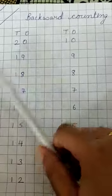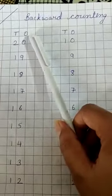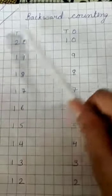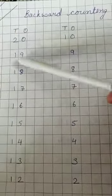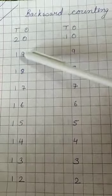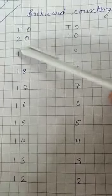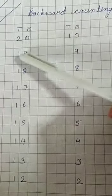20. 0 will come in 1s place and 2 will come in 10s place. 19. If there are two digits, last digit will come in 1s place and second last digit will come in 10s place.